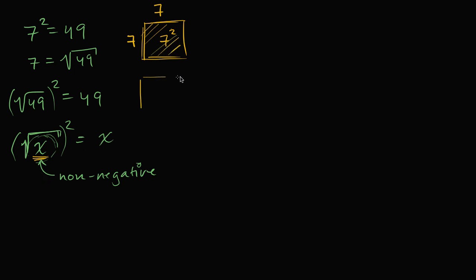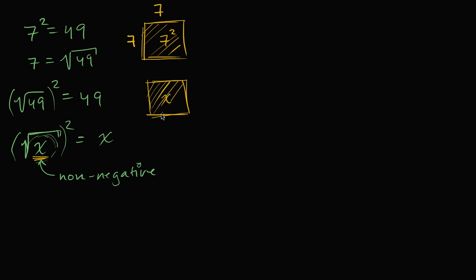Going the other way: if I have a square where all the sides are the same length and the area is x, what are the lengths of the sides? It's going to be the square root of x — all of the sides are square root of x by square root of x. That's where the term square root comes from.